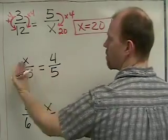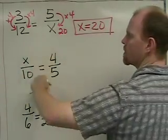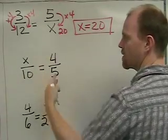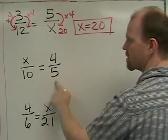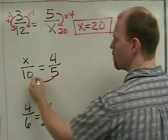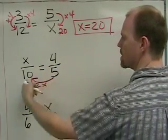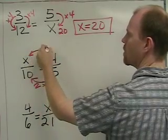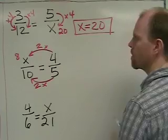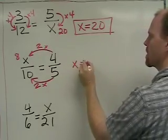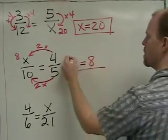For this proportion, we don't see a vertical relationship that's very easy to see. However, I see a horizontal relationship. I see that 5 times 2 is 10. So 4 times 2 is 8. So in this case, the missing value x is equal to 8.